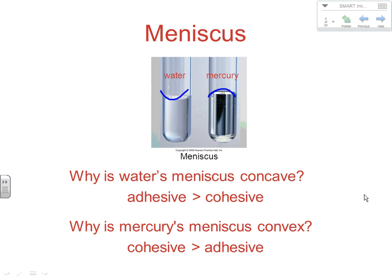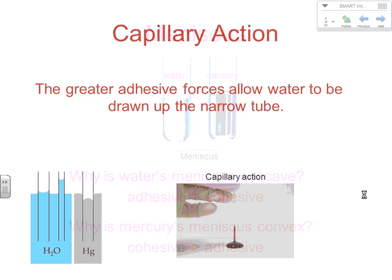Another effect of adhesive versus cohesive forces is capillary action. In a thin enough tube, the adhesive forces between water and glass are strong enough to overcome gravity, causing the water to creep up. The higher it creeps, the greater the pressure, so there's a limit to how high it rises. The more narrow the tube, the higher the water will creep up.